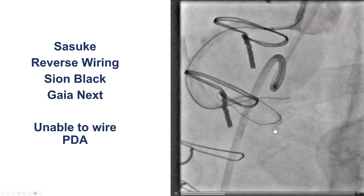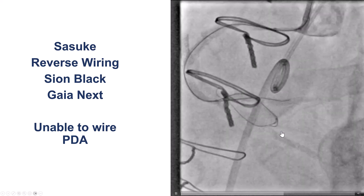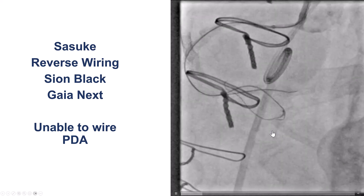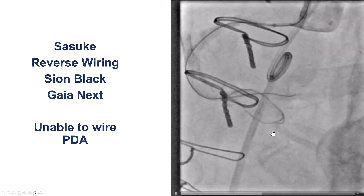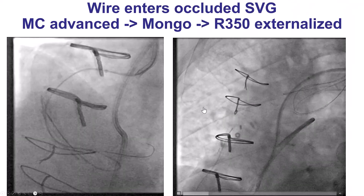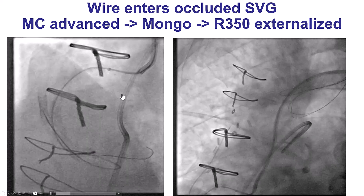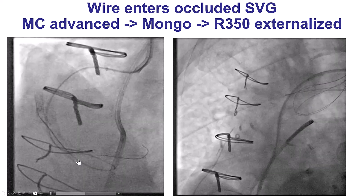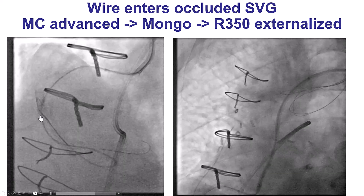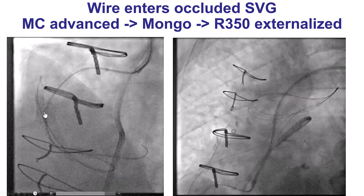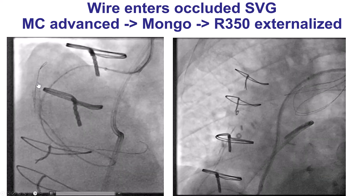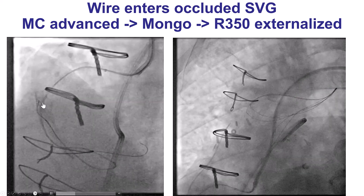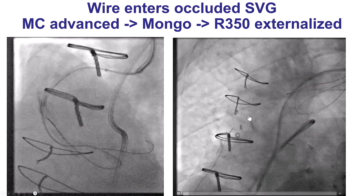How can we solve this problem? There was significant tortuosity at the touchdown of the occluded saphenous vein graft. Here is the solution we came up with: we were able to advance a retrograde Gladius Mongo all the way into the aorta. This was a relatively fresh occlusion of the saphenous vein graft, so we knew it was going to be easy to advance, and indeed the wire went easily out.